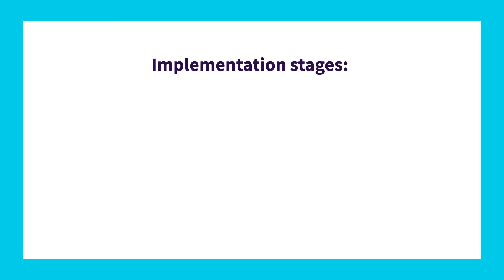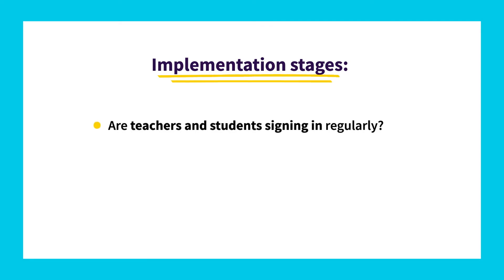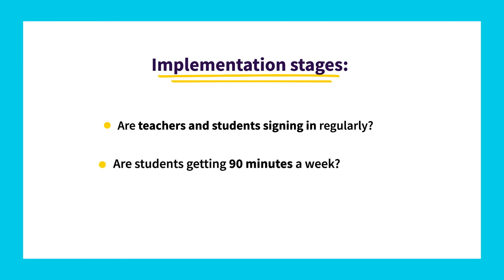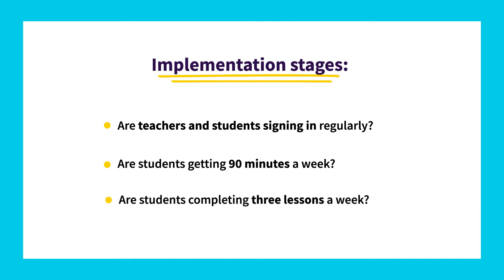You can think about your Zearn implementation as a gradual progression through these stages. First, are teachers and students signing in regularly? Next, are students learning with Zearn for at least 90 minutes a week? And finally, are students completing at least three lessons a week?